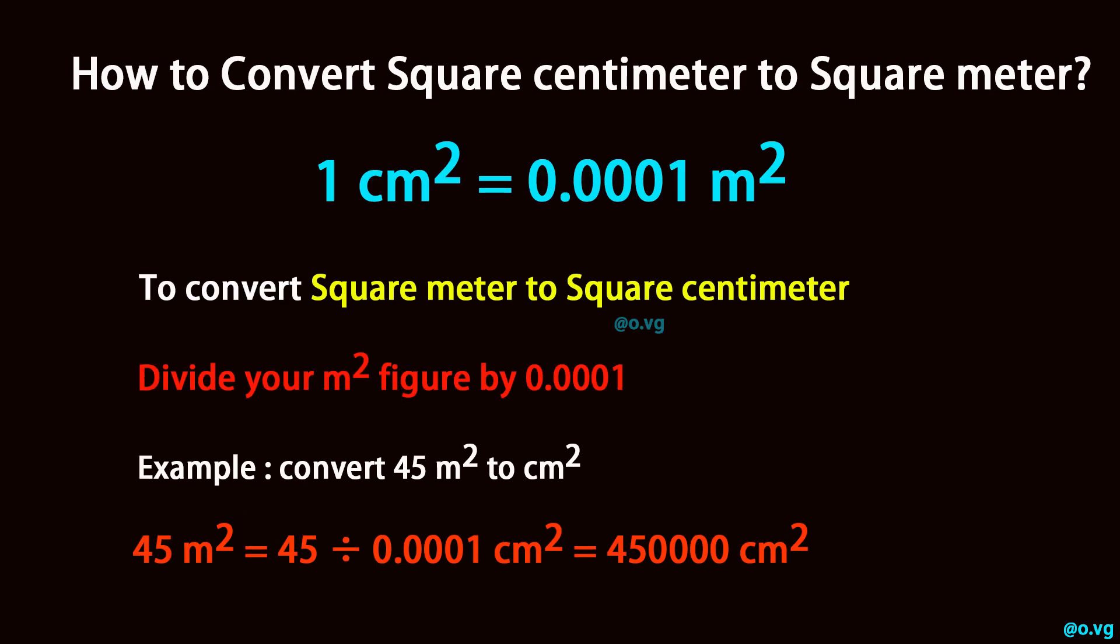To convert square meter to square centimeter, divide your square meter figure by 0.0001. Example: convert 45 square meter to square centimeter.